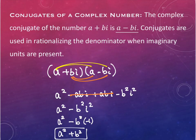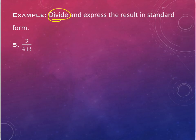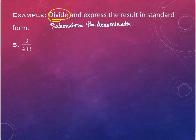So let's take an example. We have 3 over 4 plus i, and the directions say divide. Write yourself a note that what this means in this context is to rationalize the denominator.